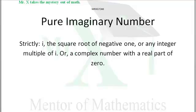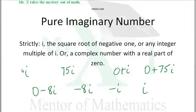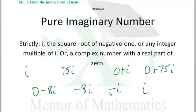So we would call these all pure or purely imaginary numbers: i, 75i, 0 plus i, 0 plus 75i, 0 minus 8i, negative 8i, negative i.